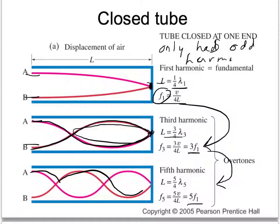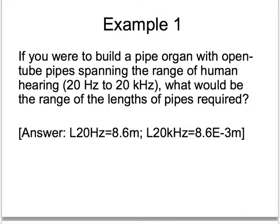Let's work through some examples. If you were to build a pipe organ with open tube pipes — so the pipes are open at both ends — we would have one half of a wavelength inside on the first harmonic. Since the first harmonic is what it's easiest to make an object vibrate at, we're going to assume that's what the organ is doing — vibrating those pipes at the first harmonic.